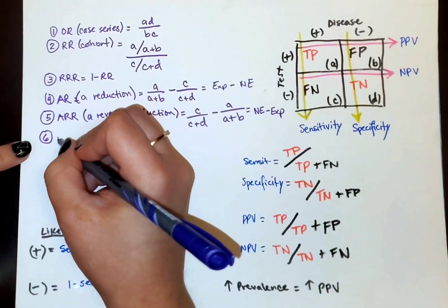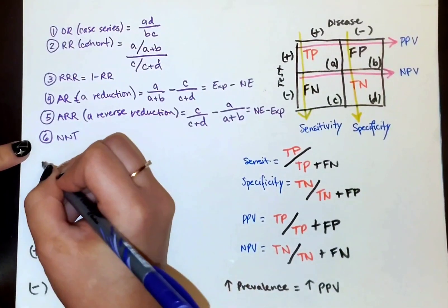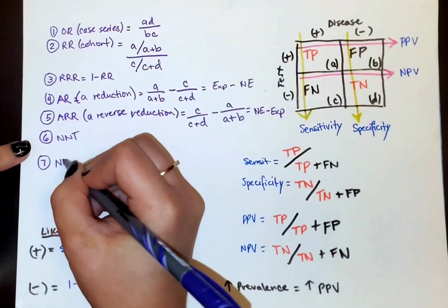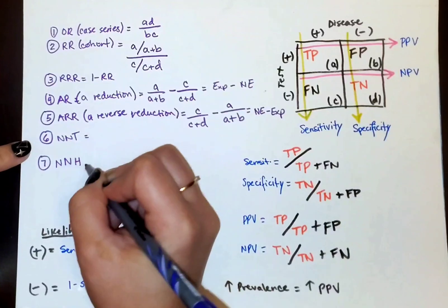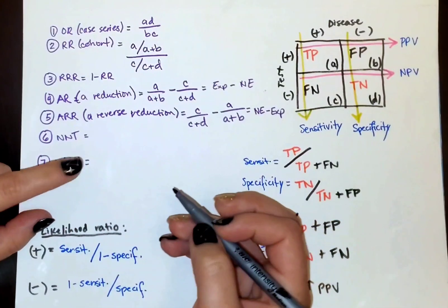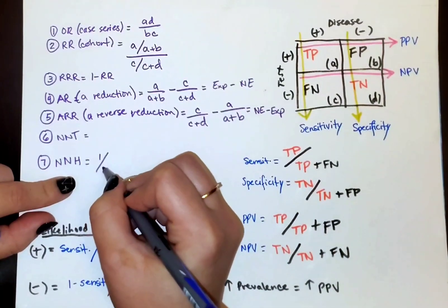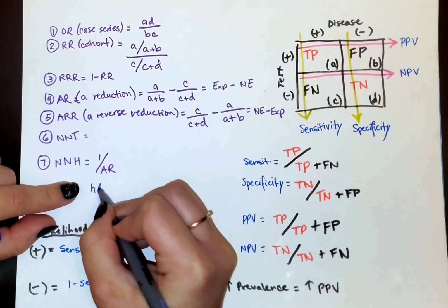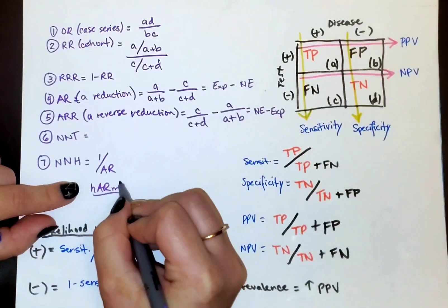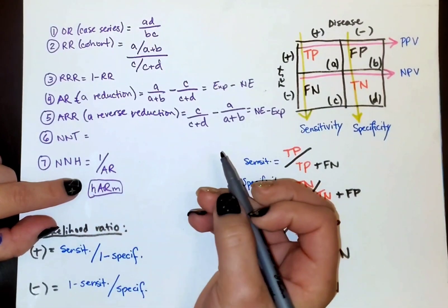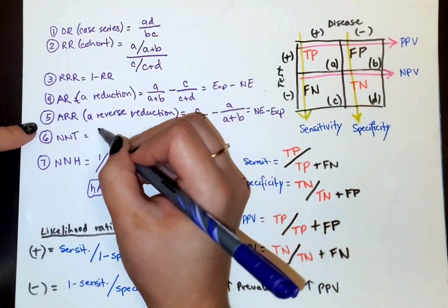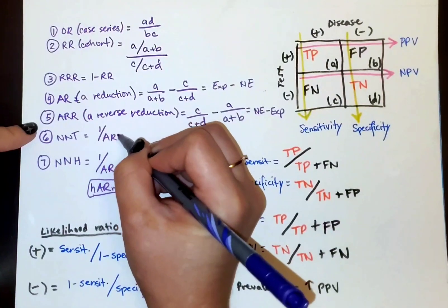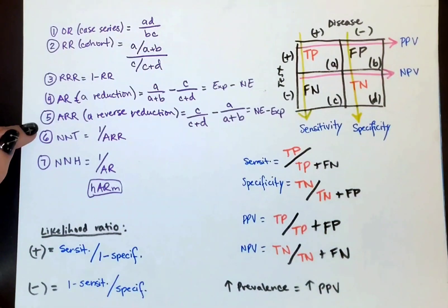Six is going to be number needed to treat and seven last one is going to be number needed to harm. I like to start with harm first, because it's easier, is one over AR. Now remember this because harm has AR in it. So one over AR. And so number needed to treat would be one over ARR, absolute risk reduction.